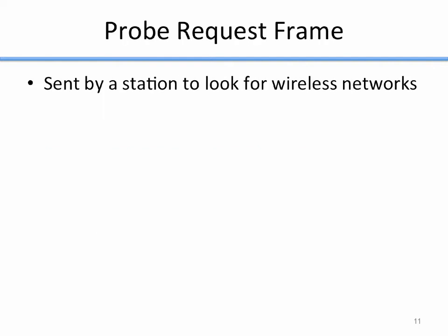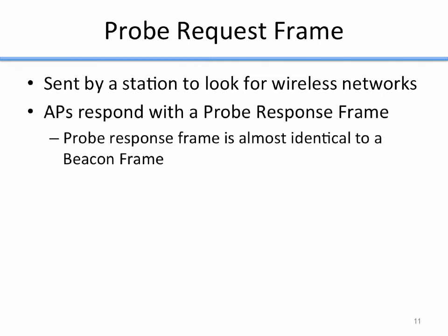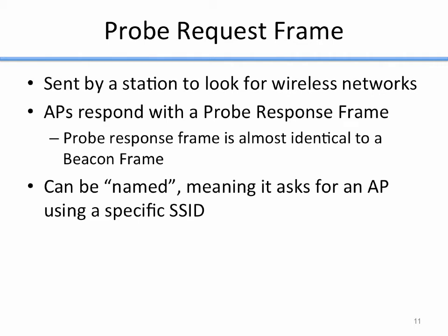Another control frame is a probe request frame, sent by a station when it's looking for a specific wireless network. Some access points are configured not to send beacon frames, so they don't advertise themselves — but a station can still find them using a probe request. Probe request frames are named, meaning a station can ask for an access point using a specific SSID. For example, my laptop might send a probe request asking 'Is there an access point named QU user?' and it will respond if present.